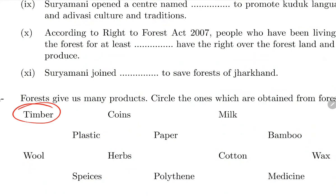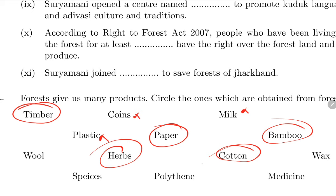Forest products include: paper, bamboo, wool, herbs, cotton, wax, spices, medicine. Note: plastic and polythene are not forest products.